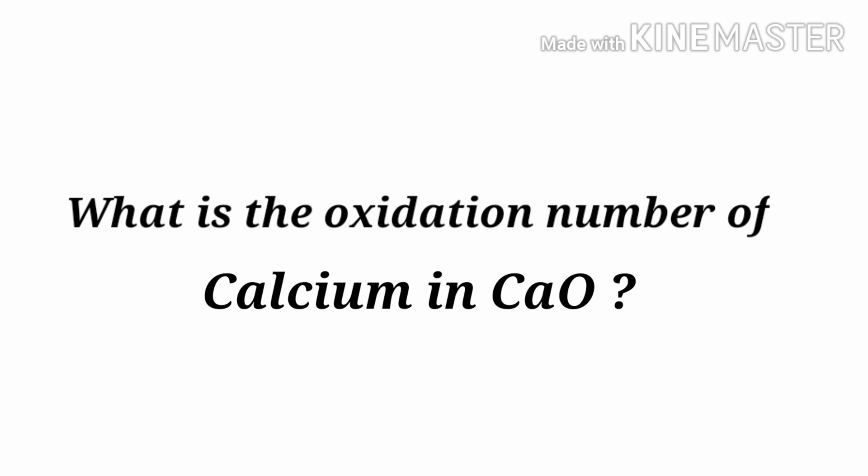What is the oxidation number of calcium in calcium oxide? We can use the oxidation number rules to determine oxidation numbers. Calcium oxide is a neutral compound with overall oxidation number zero. Therefore, we know that the sum of the oxidation numbers of atoms is equal to zero.